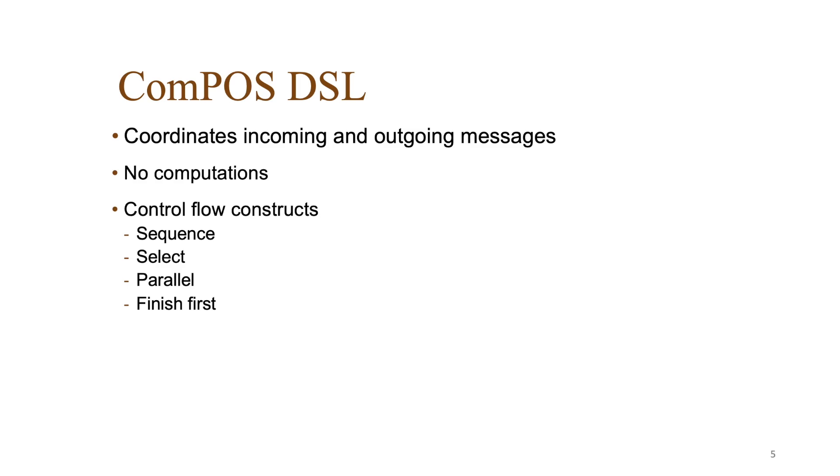COMPOS has four control constructs: Sequence for doing one thing after another, Select for handling alternative responses, Parallel for waiting for responses in parallel, and Finish First to wait for one branch to finish.